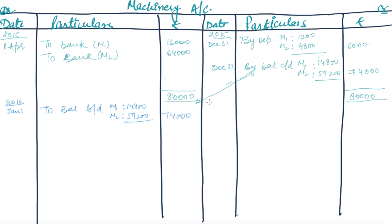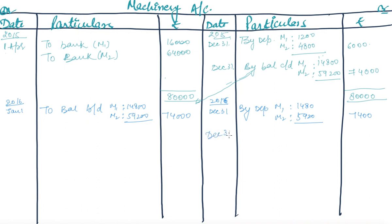For the year 2016, depreciation is computed for the full year on 31st December. For M1: 14,800 × 10% = rupees 1,480. For M2: 59,200 × 10% = rupees 5,920. Total depreciation is rupees 7,400. The closing balances are: M1 = 14,800 − 1,480 = rupees 13,320.